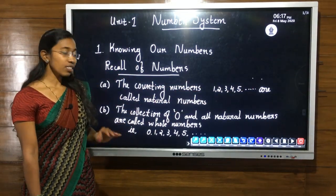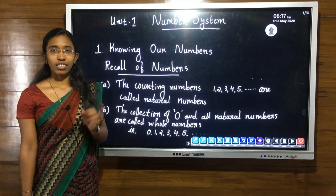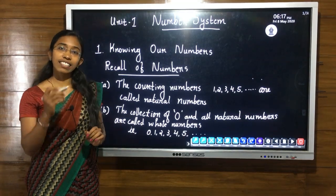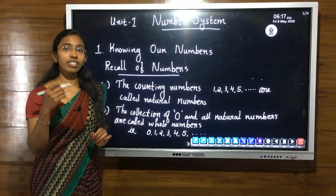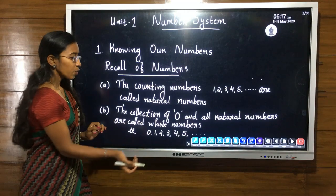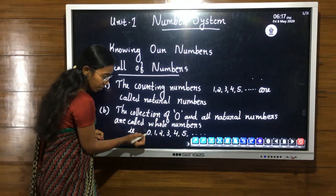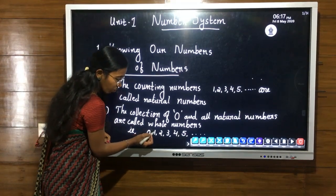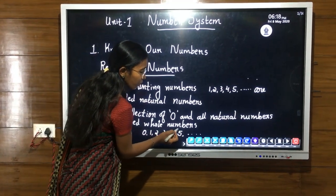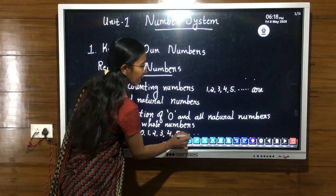The second point is whole numbers. In whole numbers, we are adding 0 to natural numbers, which means we are starting from 0, 1, 2, 3, 4, 5, and so on.